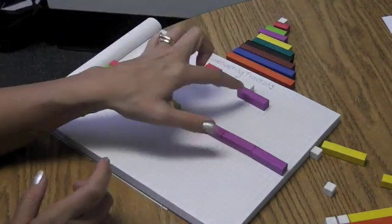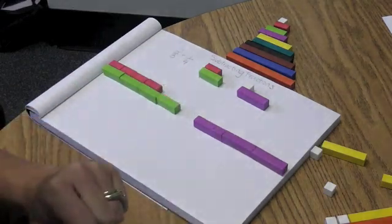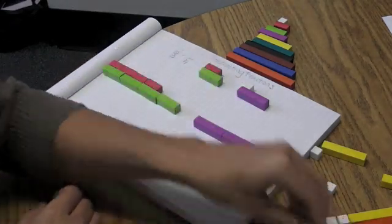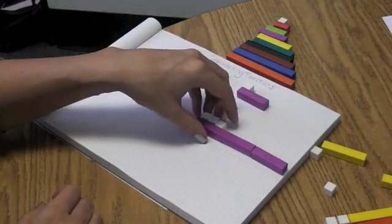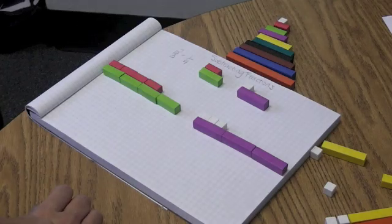So same thing on this side. I now have three purples, so I need to do the same thing to the top of my fraction. So I went from one white to three whites.